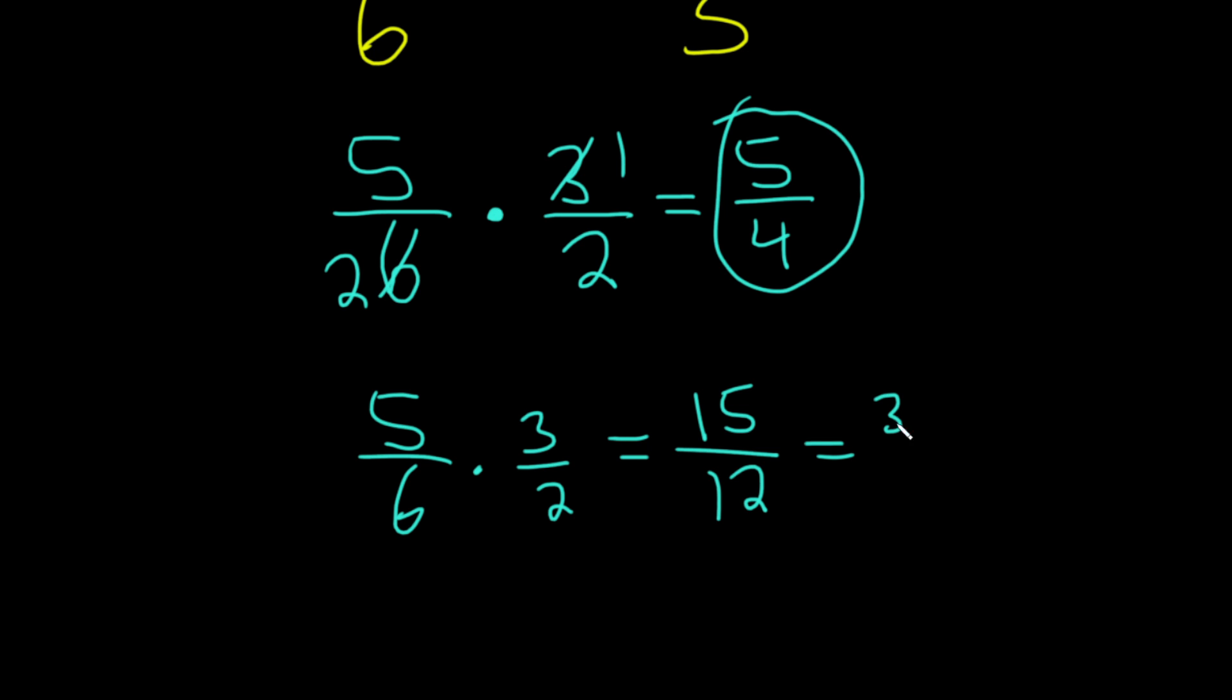So this is going to be 3 times 5, or yeah, 3 times 5 over 3 times 4, right? And then these will cancel and you'll get 5 fourths.